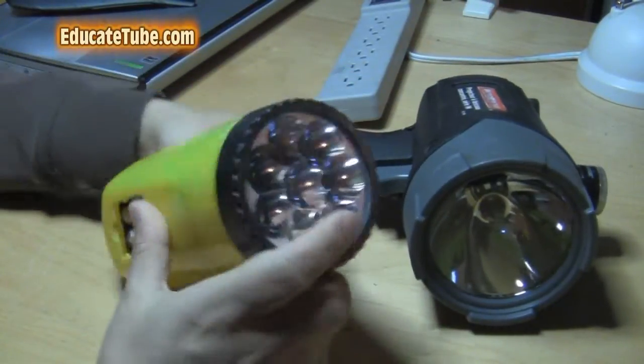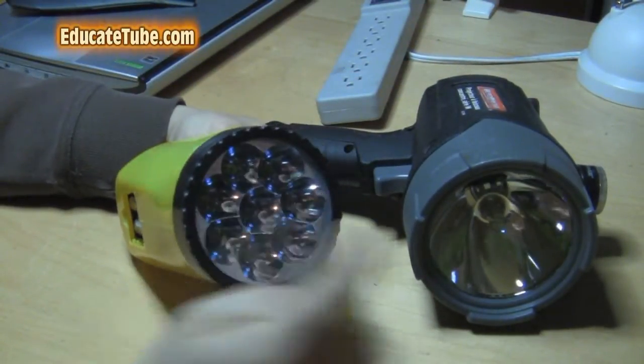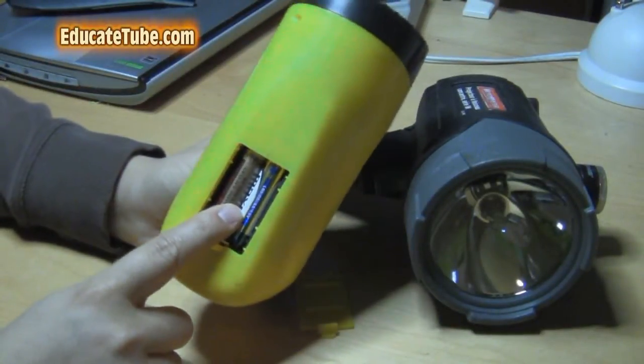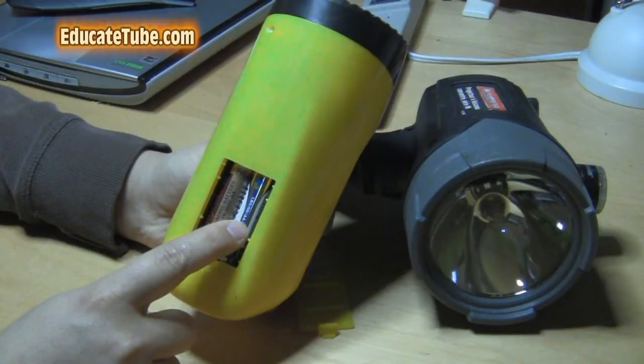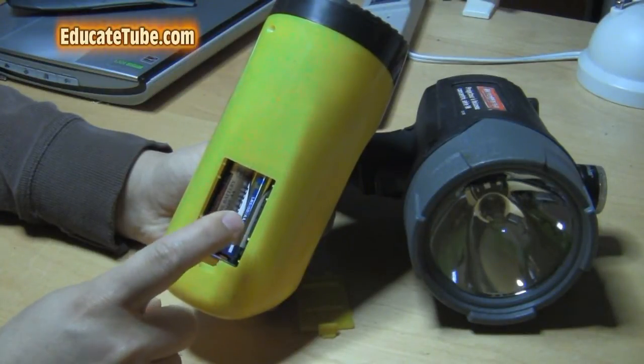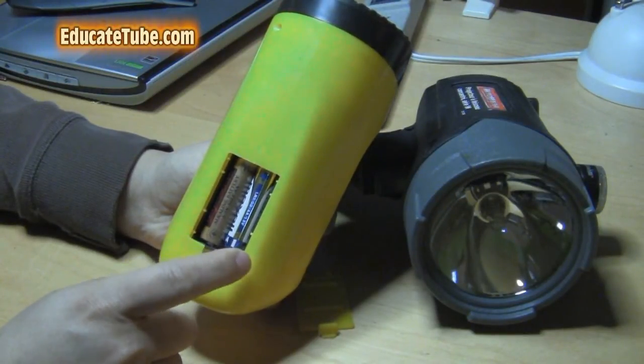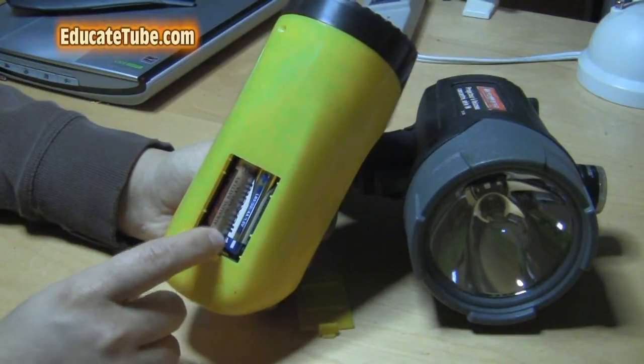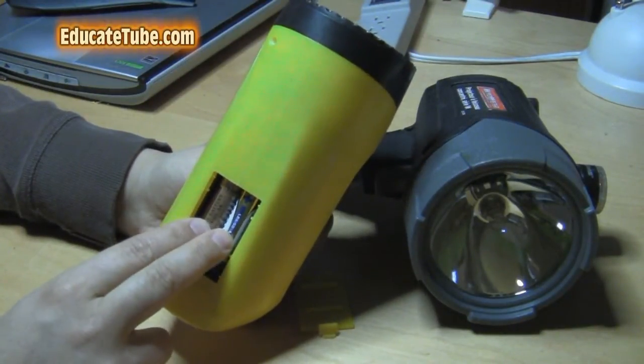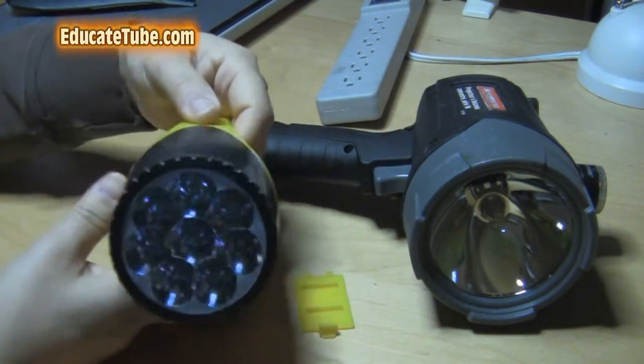The reason I know this is compatible, if I can just solder into here, is because if you look at the back here, it uses four AA batteries, and each alkaline battery is 1.5 volts, and if you multiply that by 4, that's 6 volts. So this is actually a 6-volt battery system LED light.